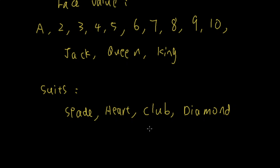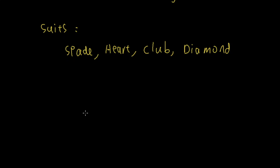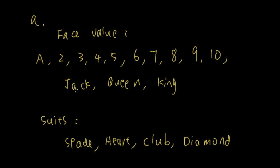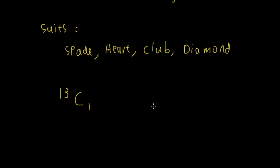4 of a kind means you have to choose one of these face values and choose 4 cards, where all 4 cards have the same face value — just with all 4 suits. Since the order doesn't matter, we use combination. There are 13 face values and you choose one of them: that's 13 choose 1. You also need to choose all 4 suits of that face value, which is 4 choose 4.